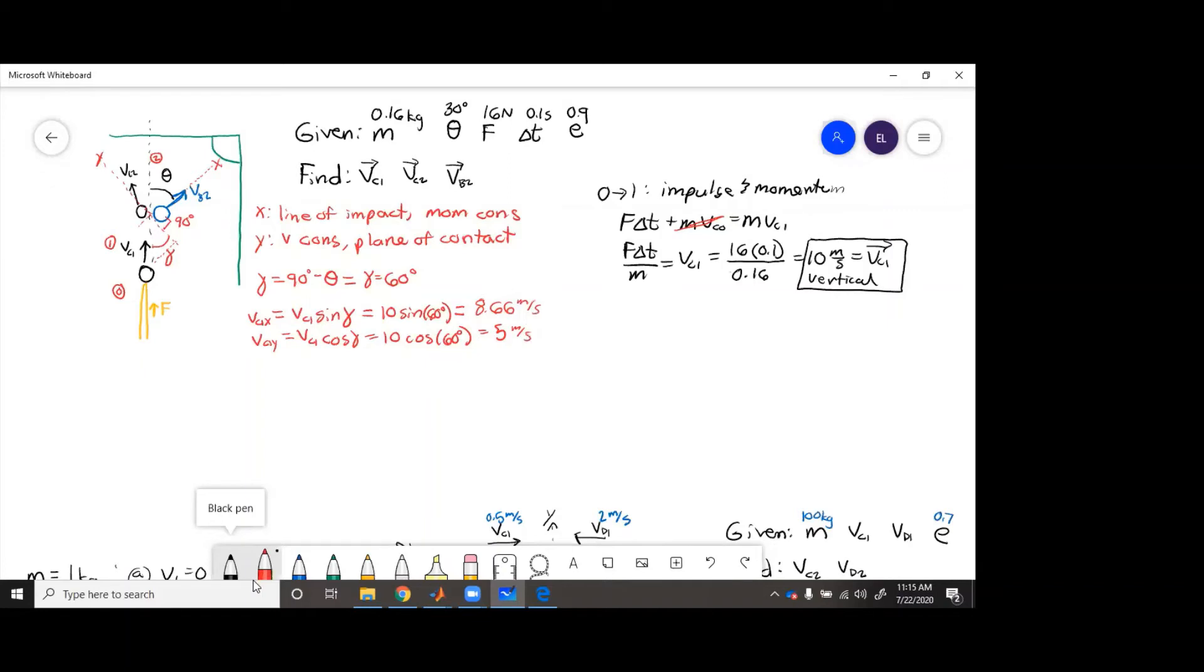Okay, now in the y direction, velocity is conserved. So we know this equals vc2y. Then in the x direction, we can use the equation and conservation momentum and solve for vc2x and vb2.